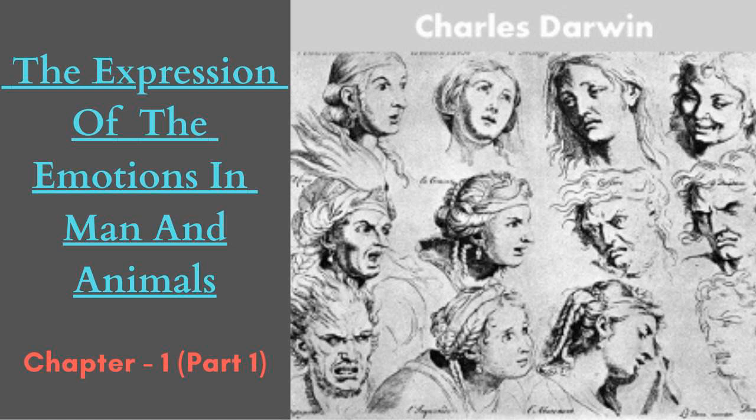From the continued use of the eyes, these organs are especially liable to be acted on through association under various states of the mind. Although there is manifestly nothing to be seen, a man — as Gratiolet remarks — who vehemently rejects a proposition will almost certainly shut his eyes or turn away his face; but if he accepts the proposition he will nod his head in affirmation and open his eyes widely. The man acts in the latter case as if he clearly saw the thing, and in the former case as if he did not or would not see it. I have noticed that persons in describing a horrid sight often shut their eyes momentarily and firmly, or shake their heads as if not to see or drive away something disagreeable; and I have caught myself, when thinking in the dark of a horrible spectacle, closing my eyes firmly. In looking suddenly at any object, or in looking all around, everyone raises his eyebrows so that the eyes may be quickly and widely opened.